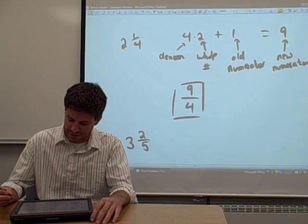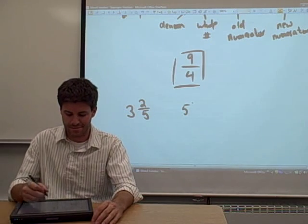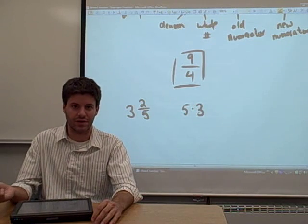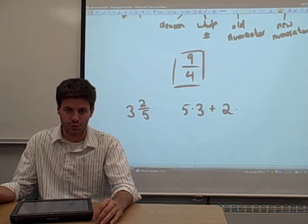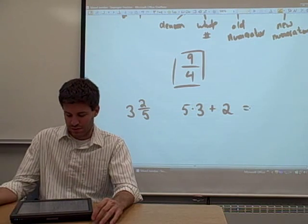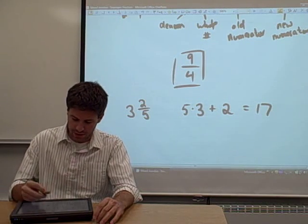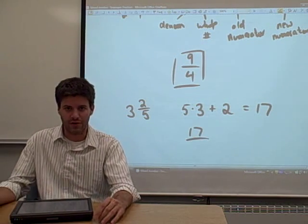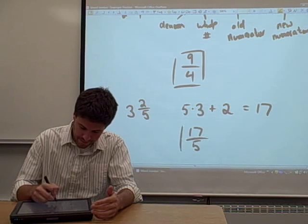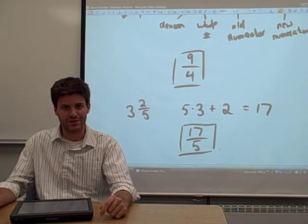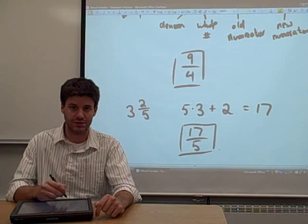So let's check it out. Any time you have a mixed number and you want to convert it to an improper fraction, you take the denominator, multiply it by the whole number in the problem — in this case it's a 3 — and then you add to that your numerator, 2. You do the math: 5 times 3 plus 2 is 17. That gives you your numerator, and you throw it on top of the denominator from your mixed number, which was a 5. So 17 fifths is an improper fraction that equals the mixed number 3 and 2 fifths.